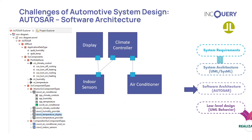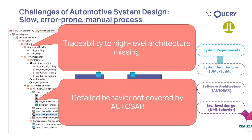Moving further, the software architecture of the application is defined using an AUTOSAR authoring tool. The software composition defines the structure, data flow, and contract of the software — the components and ultimately the signature of the functions to be implemented. However, there are two major limitations: first, there is no direct connection between the system-level elements and the software architecture, and defining such traceability is crucial for consistency. Second, AUTOSAR capabilities end with the software contract — providing detailed behavior models for software is intentionally out of scope for the AUTOSAR standard.